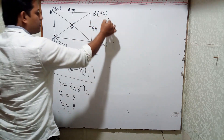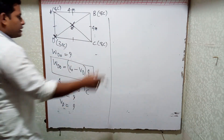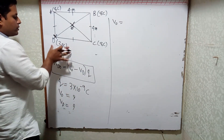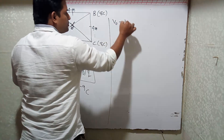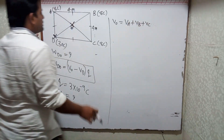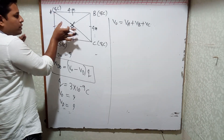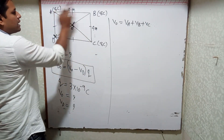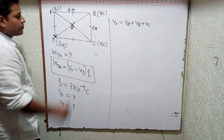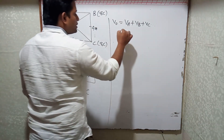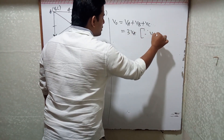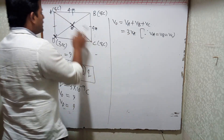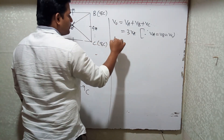Let us calculate V_O — the potential at O due to charges at A, B, and C. We should not include the test charge at D. So V_O = V_A + V_B + V_C. Since the charges are the same and the distances AO, BO, CO are all equal, this simplifies to 3 × V_A. Now I need to calculate the distance AO.